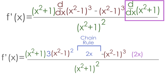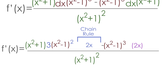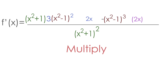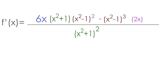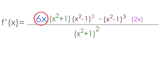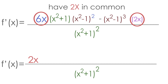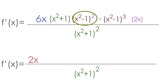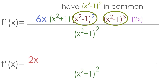Now we have some algebra to simplify this derivative further. First, multiply 2x and 3 together: 2x times 3 equals 6x, which goes in the front. Now we can factor. Both the front term and the back term share a factor of 2x, and both terms also share at least two factors of (x² - 1), so we can factor out 2x and (x² - 1)².